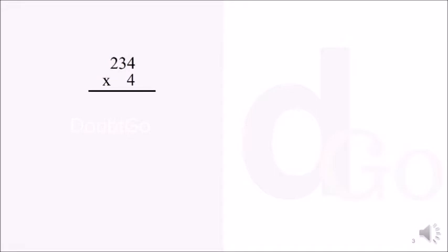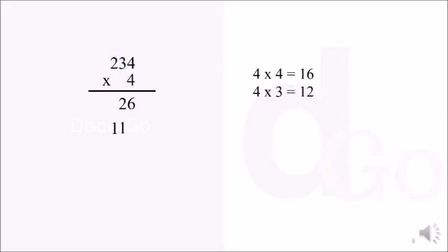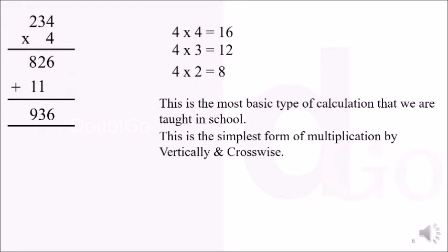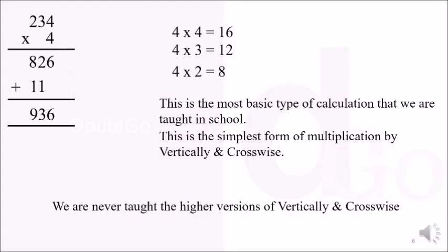We will start from the most basic example: 234 × 4. We multiply 4 × 4 which gives 16 — we put 6 and carry 1. Then we multiply 4 × 3 to get 12 — we put 2 and carry 1. Finally, we multiply 4 × 2 to get 8. Adding all these together gives our answer of 936. This is the simplest type of calculation taught in school, and the simplest form of multiplication by vertically and crosswise.